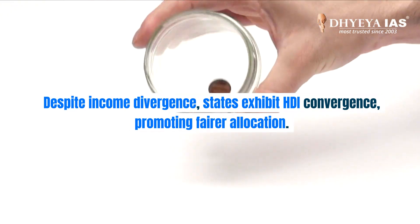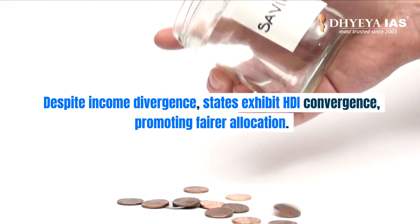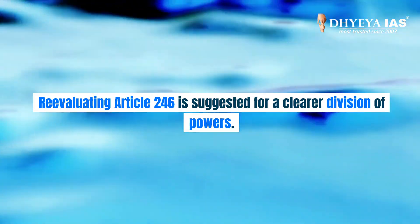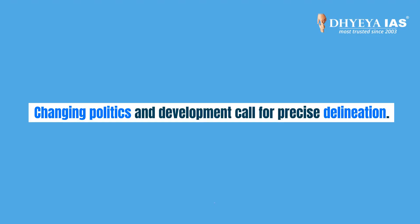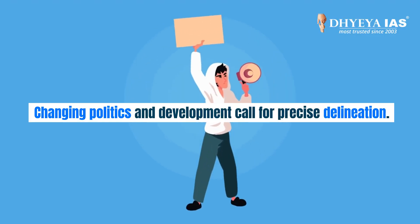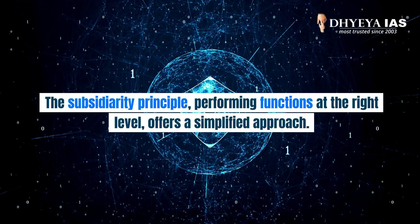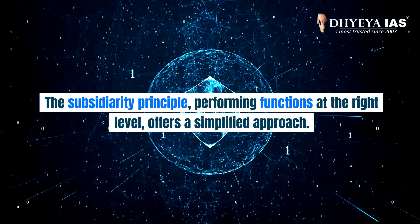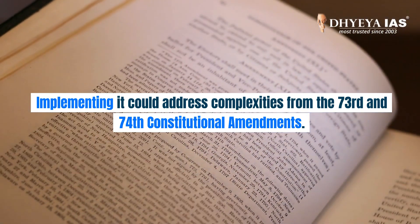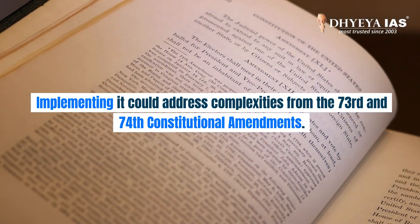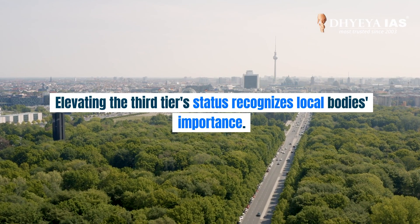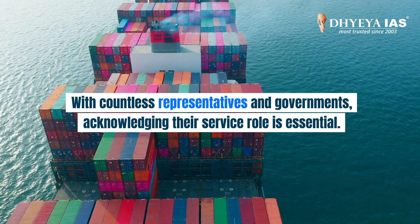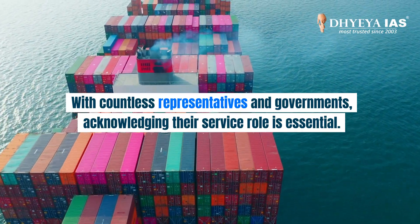Despite income divergence, states exhibit HDI convergence, promoting fairer allocation. Re-evaluating Article 246 is suggested for a clearer division of powers, as changing politics and development call for precise delineation. The subsidiarity principle — performing functions at the right level — offers a simplified approach. Implementing it could address complexities from the 73rd and 74th constitutional amendments. Elevating the third-tier status recognizes local bodies' importance, with countless representatives and governments acknowledging their service role as essential.